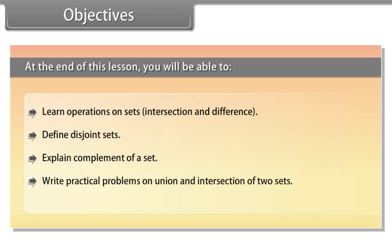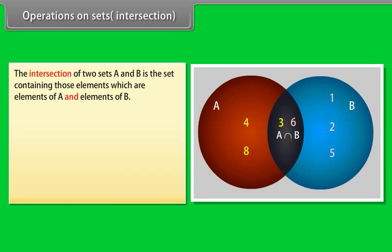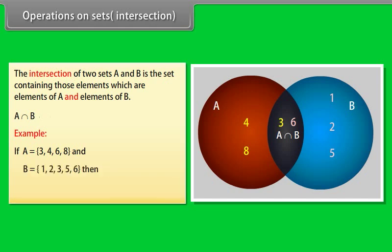Operations on sets — Intersection. The intersection of two sets A and B is the set containing those elements which are elements of A and elements of B. We use this symbol for intersection. For example, if A = {3, 4, 6, 8} and B = {1, 2, 3, 5, 6}, then A intersection B = {3, 6}.